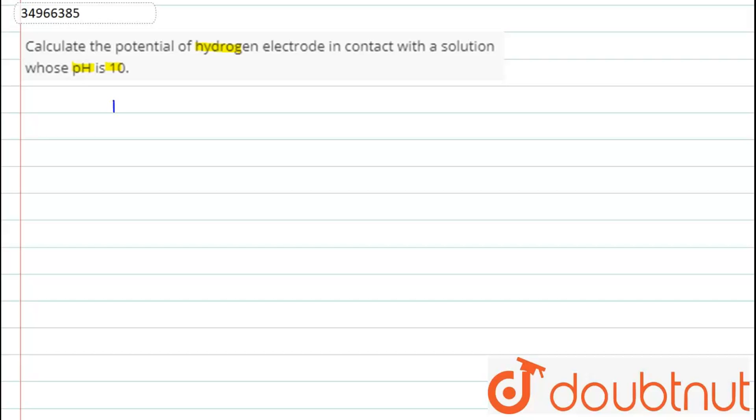So here in this question, pH of the solution is given as 10 and we have to find out the potential of H+ to H2 conversion. First we will find out the E0 cell.